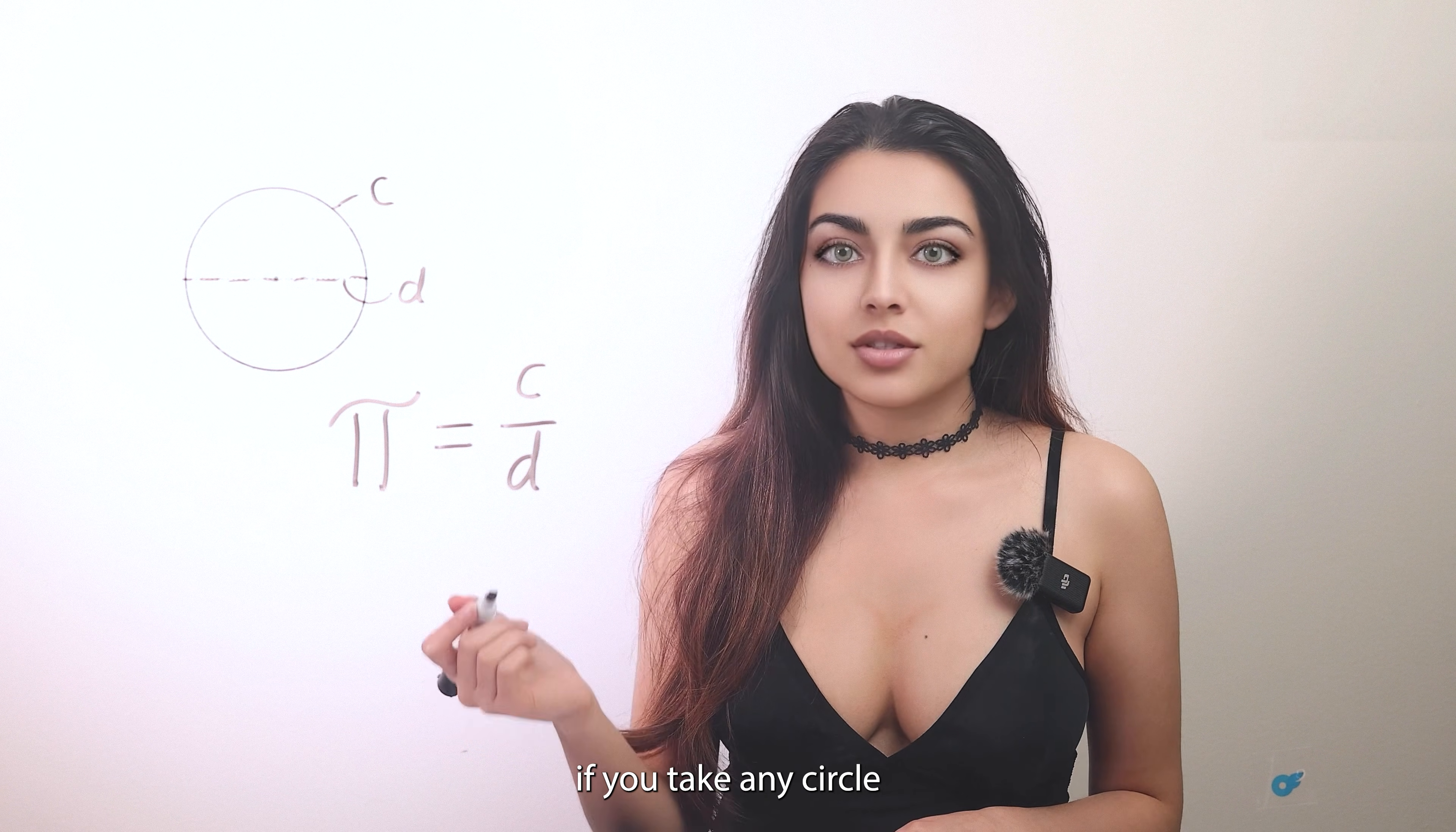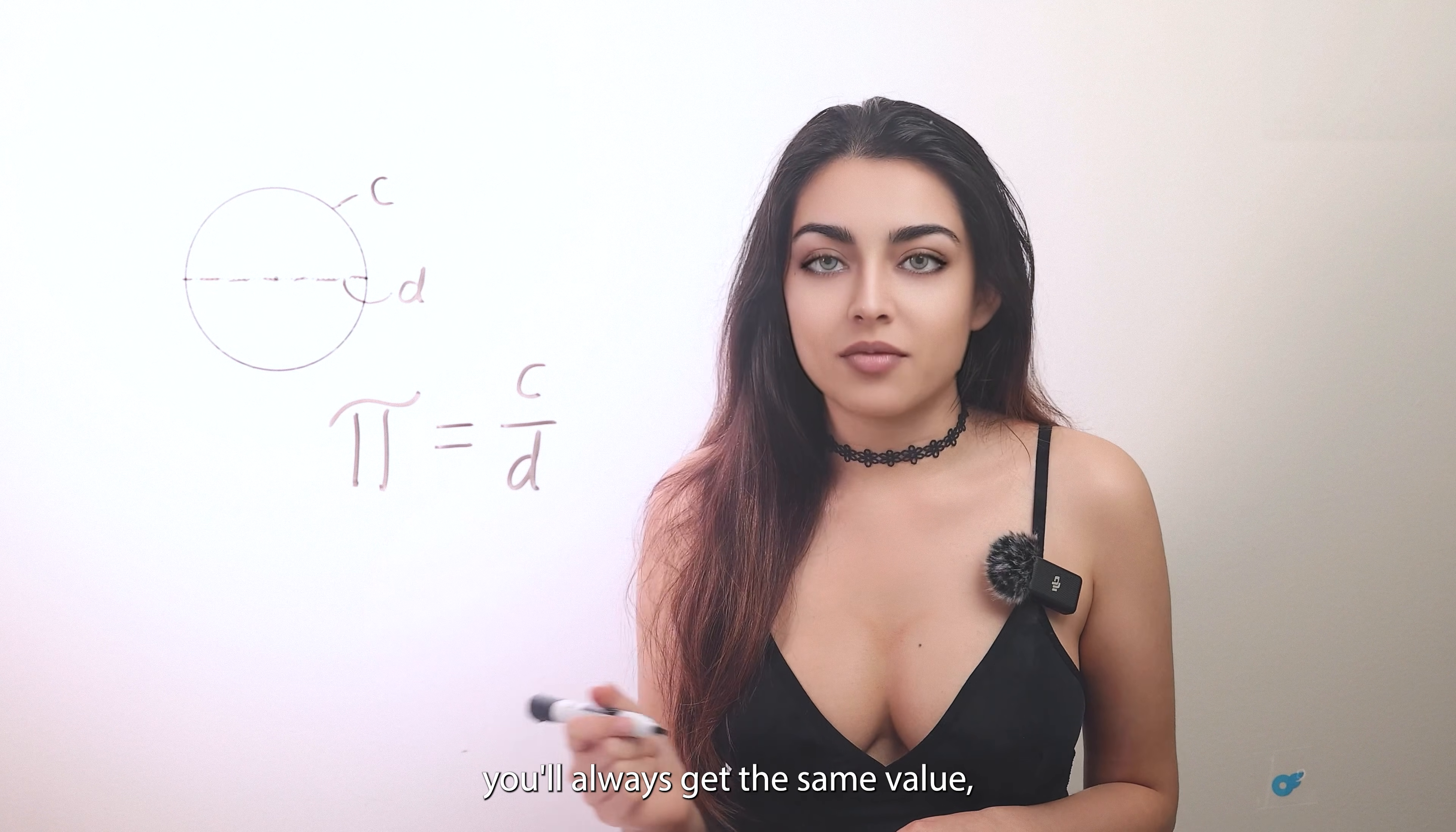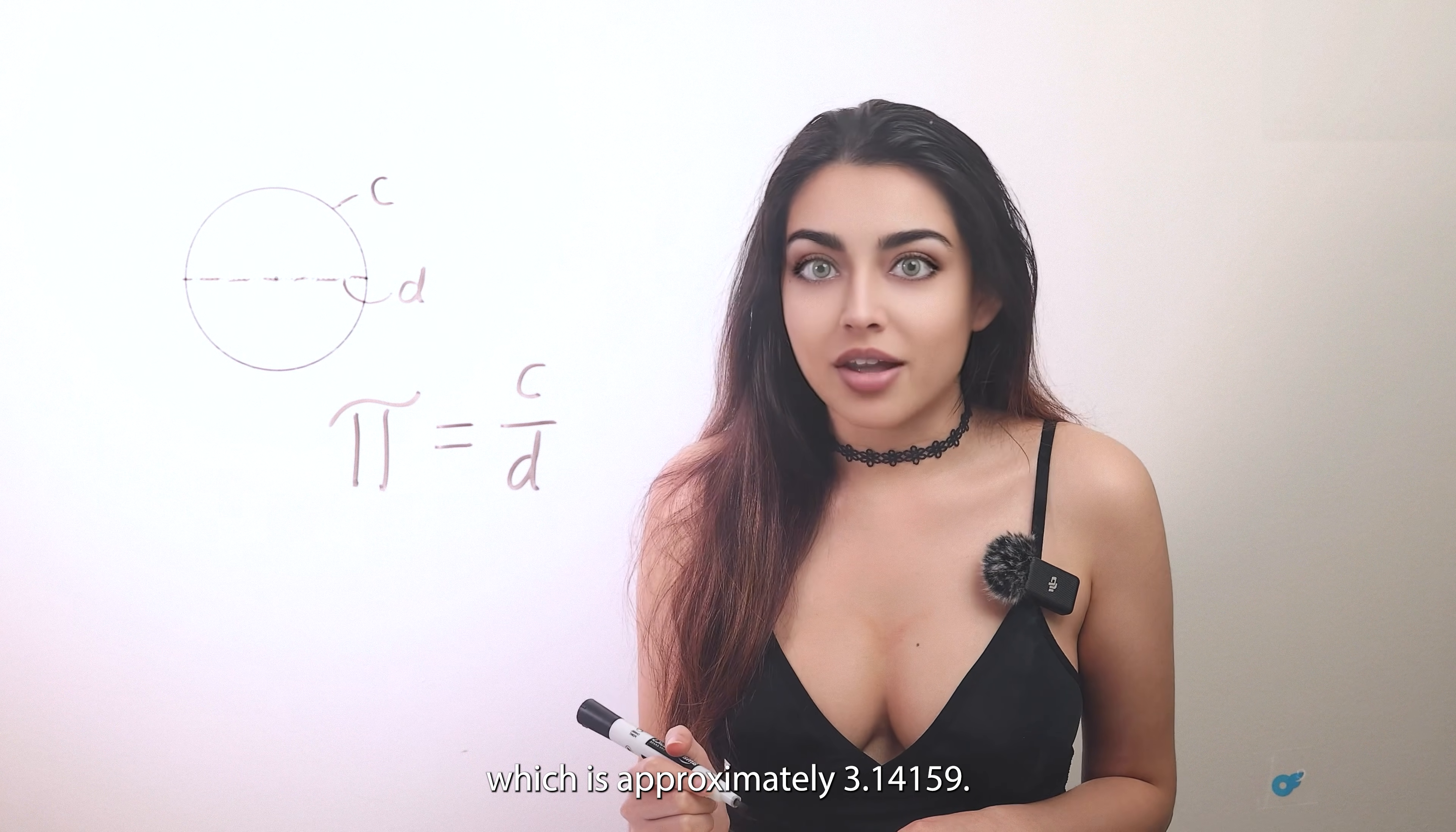In other words, if you take any circle and divide its circumference by its diameter, you'll always get the same value, which is approximately 3.14159.